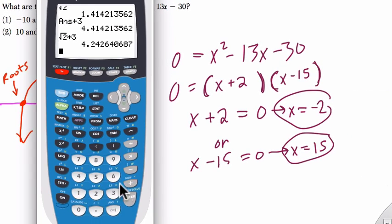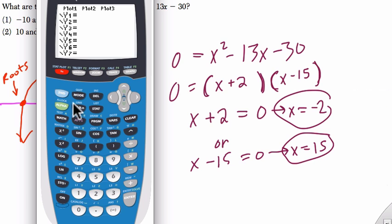Another way to approach this is to press the y equals button on your calculator, enter in x squared minus 13x minus 30, and press the graph button.